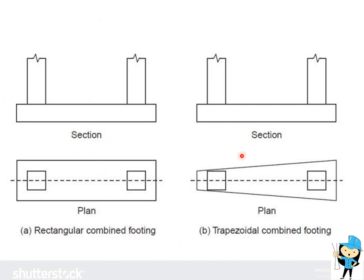This is the image of Combined Footing. As mentioned, more than one column shares a single footing — column number 1 and column number 2 both have a single footing. The shape can vary: this is a rectangular combined footing, and this is a trapezoidal combined footing.